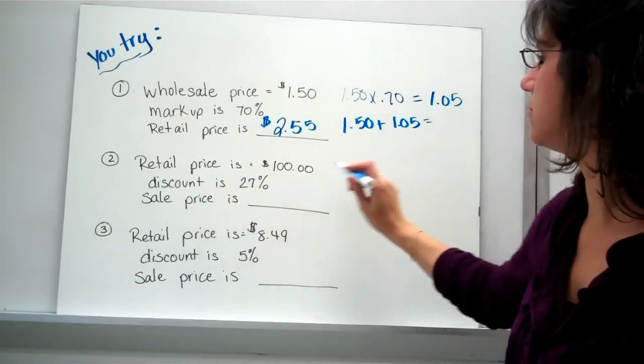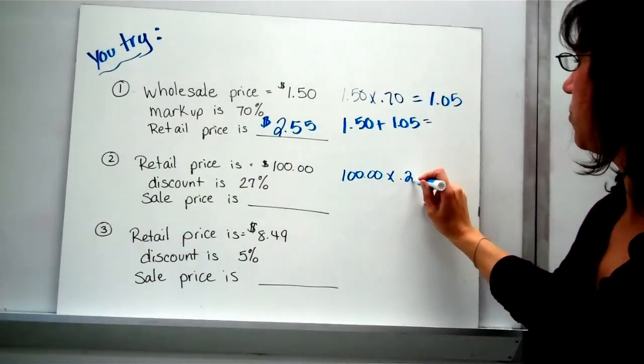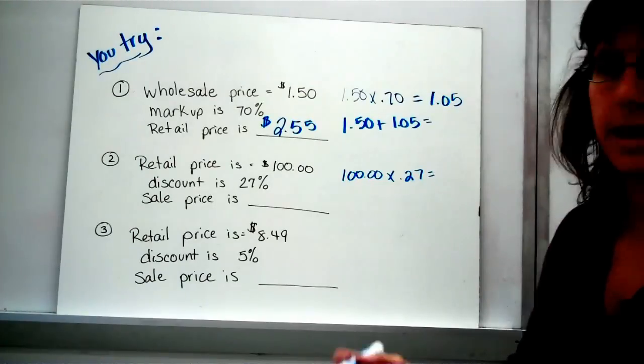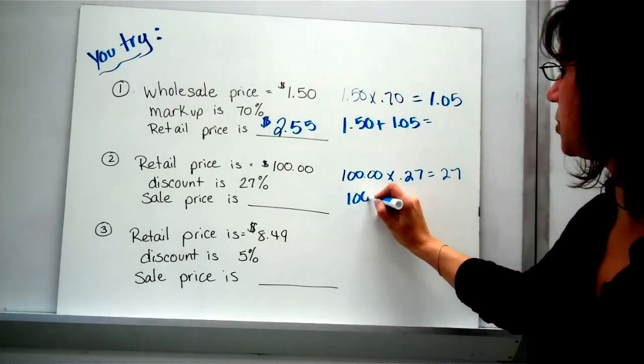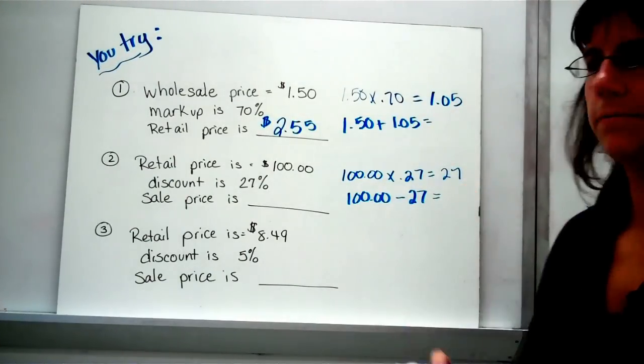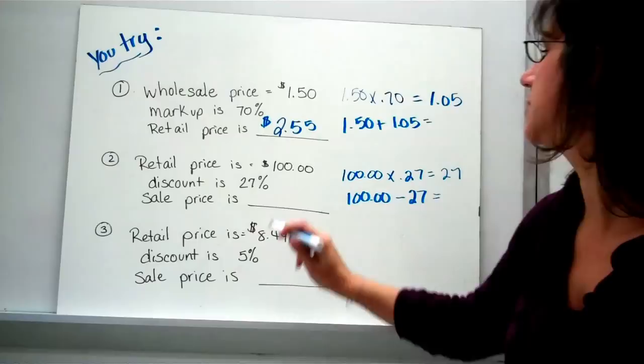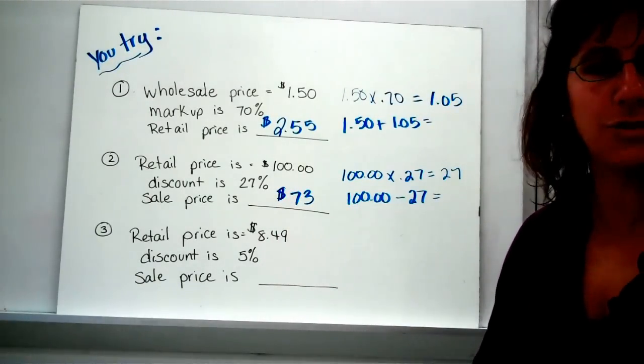This one is a discount, so you want to do $100 times .27. That's how much you're going to save, and then you're going to take the original price and subtract how much you're going to save. So your new price, you don't have to pay $100. You only have to pay $73.